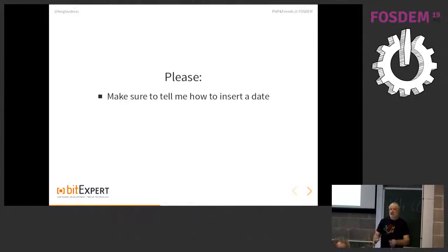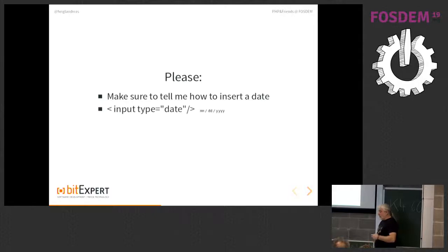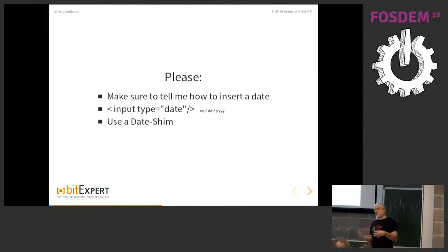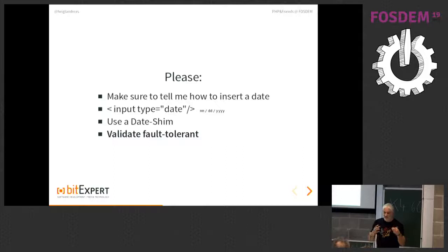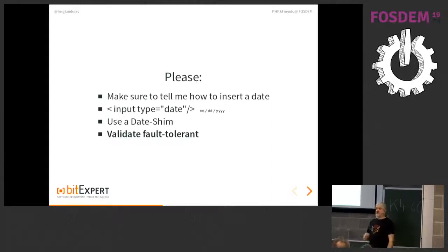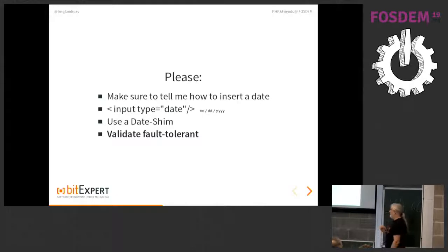If you request a date, please make sure you tell me what you expect me to insert. The best thing is to use input type equals date — there is a form field for that, so use it. Or use a date shim or datepicker. And then please validate fault-tolerantly: even though you told me to insert DD.MM.YYYY, I might enter 1.12.2001 — I just skipped the initial zero. That is still a valid date, and you know what I meant, so please do not give me that as an error.